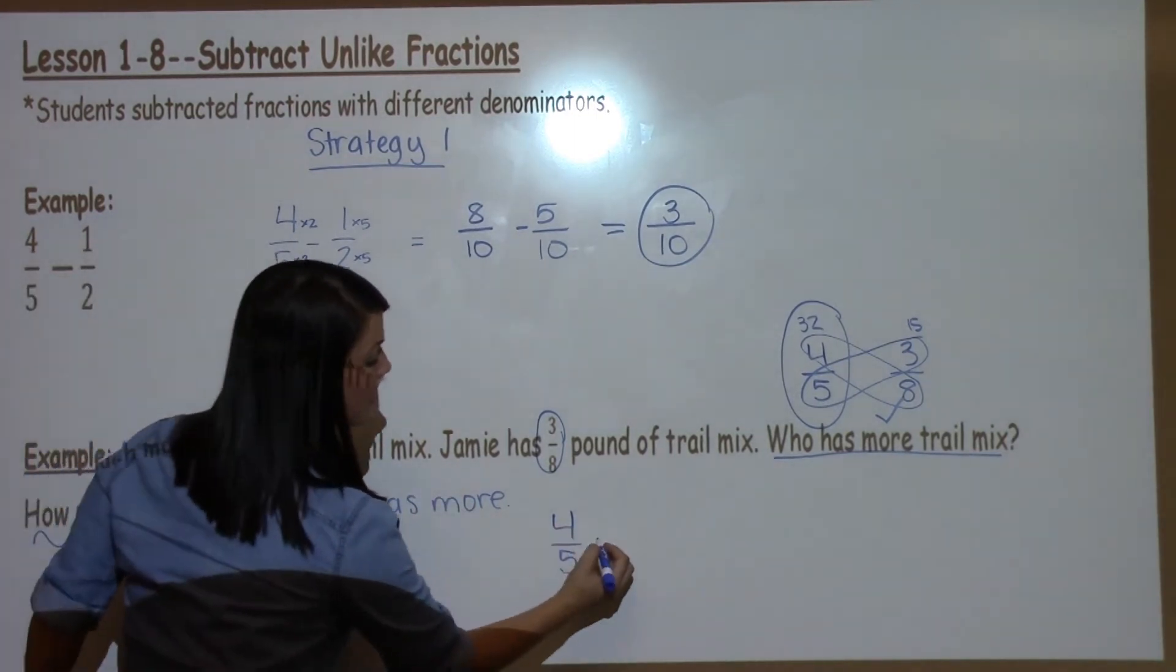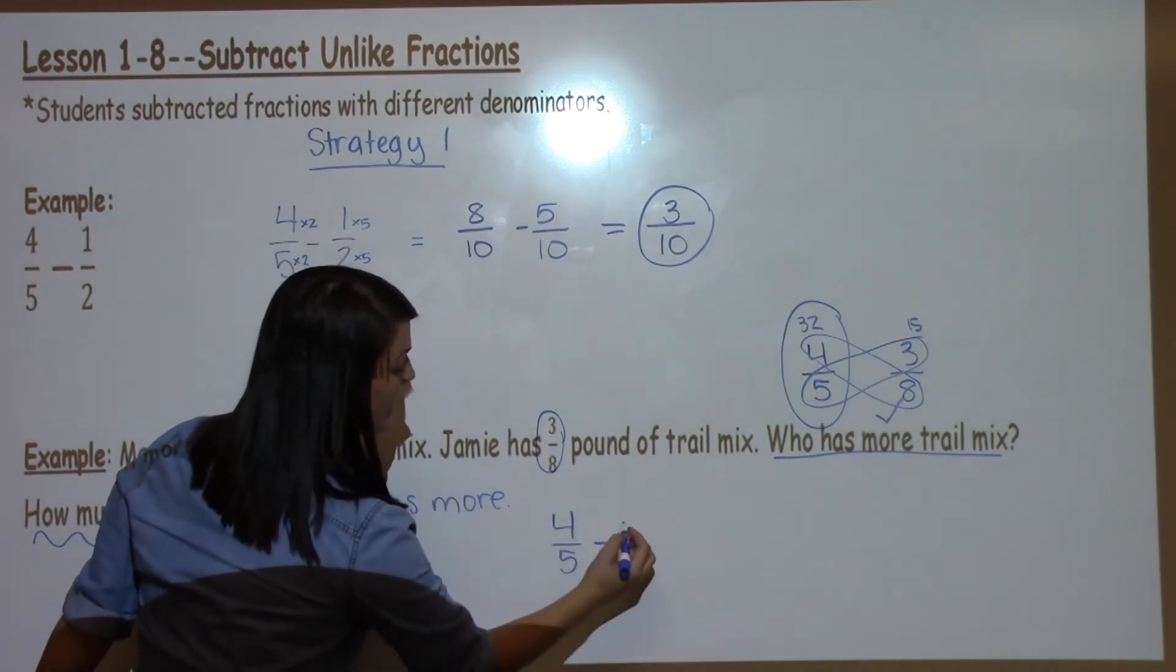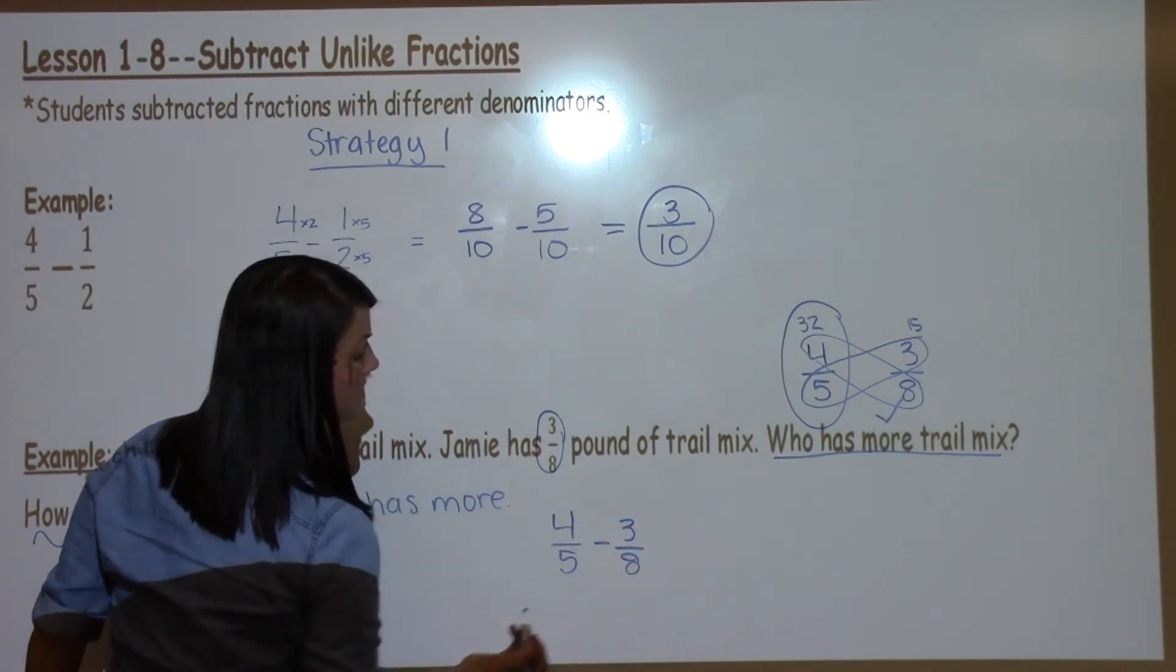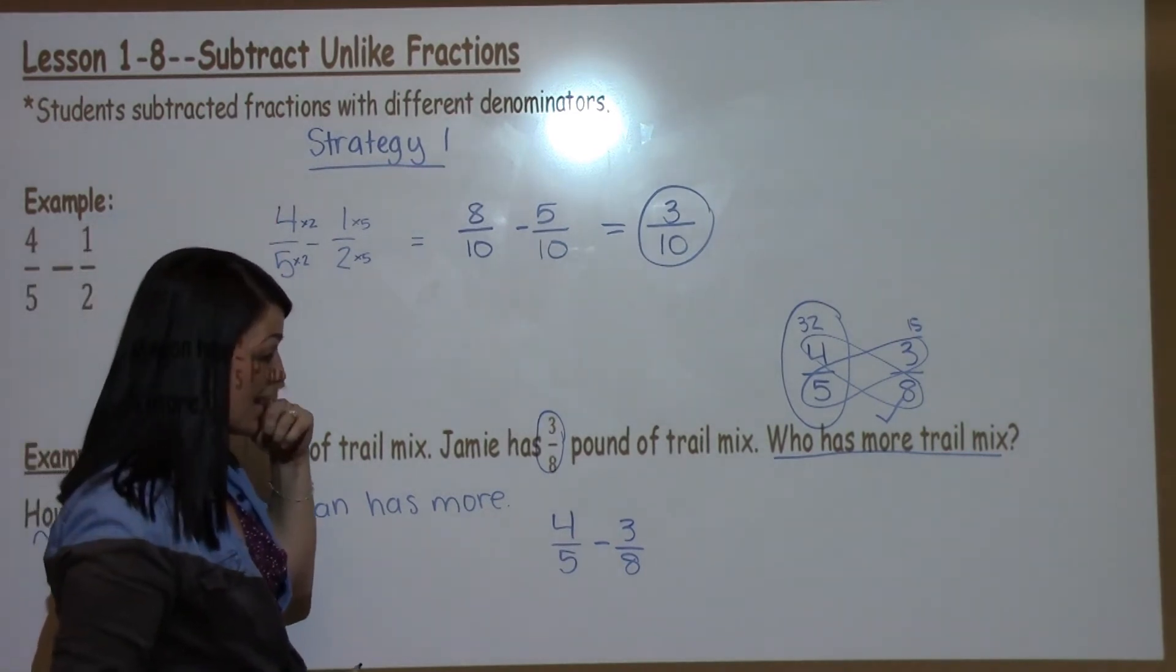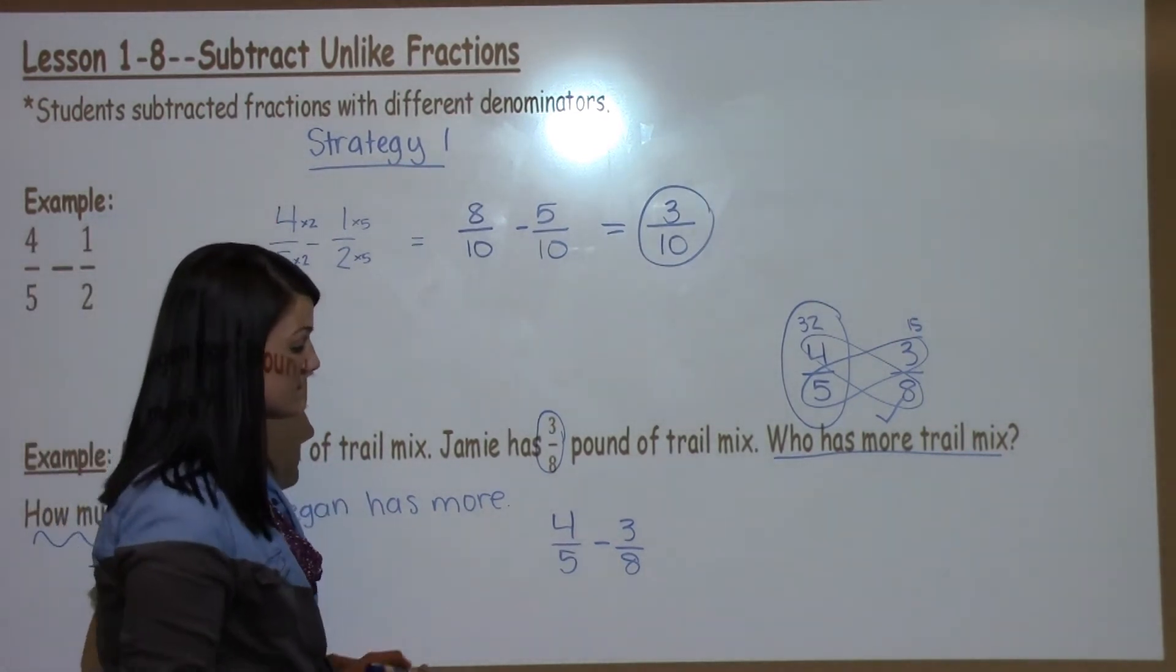So I'm going to subtract 4 fifths. I just figured out that it's more so it's going to go first in my number sentence minus 3 eighths. Now I'm going to use Strategy 1 to make these denominators the same before I subtract.